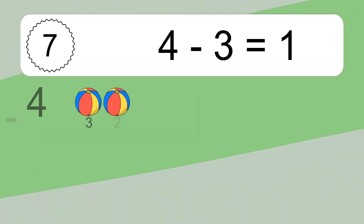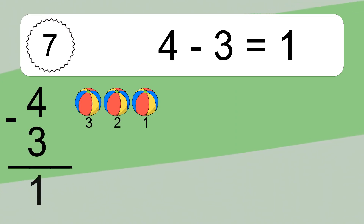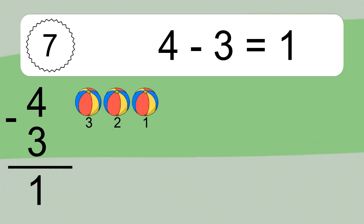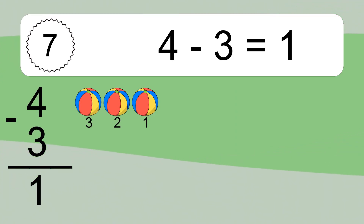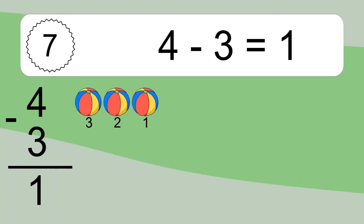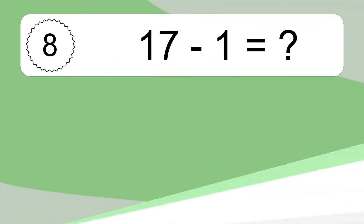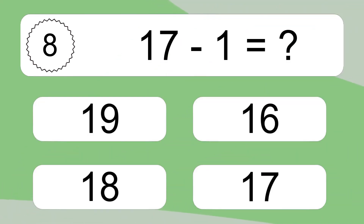4 minus 3 equals what? 4 minus 3 equals 1. Let's count it. 3, 2, 1.